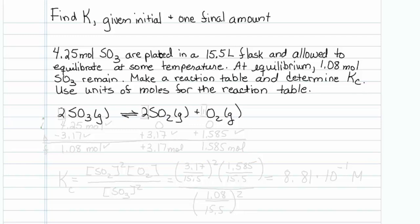Use units of moles for the reaction table. We have our initial row. Right before the reaction starts, we have 4.25 moles of sulfur trioxide and no product. Delta is what we're going to figure out. We are given a final amount at equilibrium — 1.08 moles of SO3 remain.